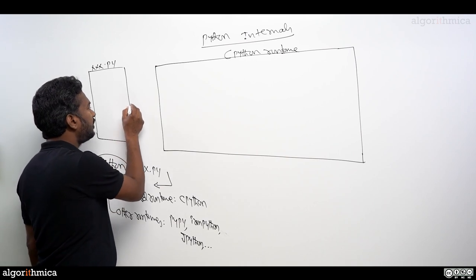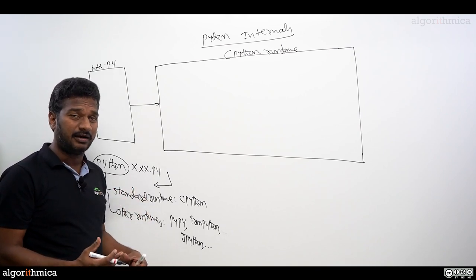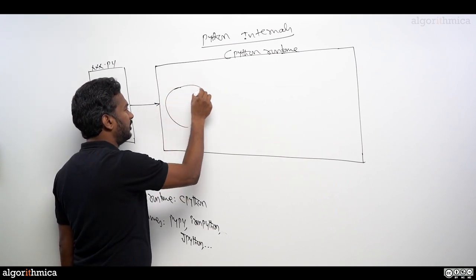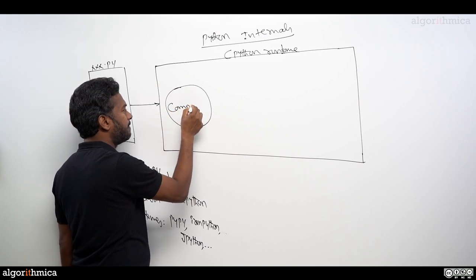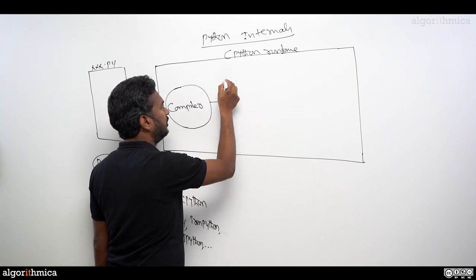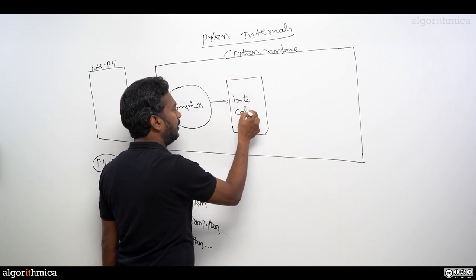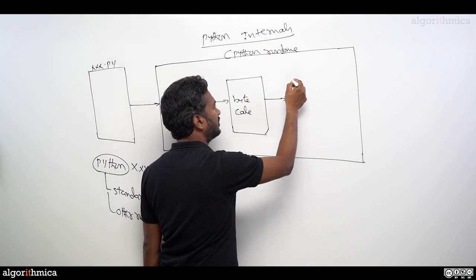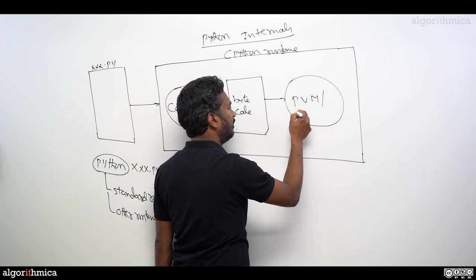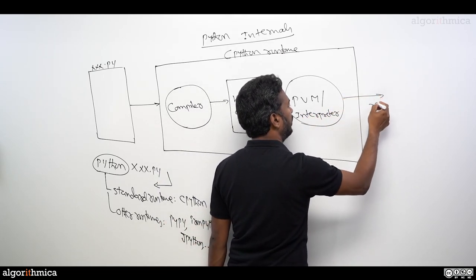What happens inside? Your Python file is given as input. The first stage inside the CPython runtime is a compiler. This compiler takes our Python script and creates bytecode — an intermediate file. This bytecode is then given to one more software component called the Python Virtual Machine, or PVM, also called the Python interpreter. The output of this is the program result we expected.